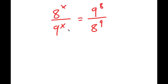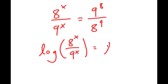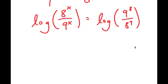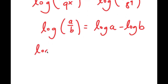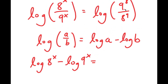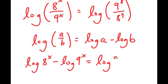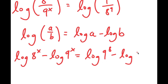Now from here I'm going to take the log on both sides. So I get log of 8 to the power of x over 9 to the power of x equals log of 9 to the power of 8 over 8 to the power of 9. Using the property log(a/b) equals log a minus log b, the left side becomes log of 8 to the power of x minus log of 9 to the power of x, and the right side becomes log 9 to the power of 8 minus log 8 to the power of 9.